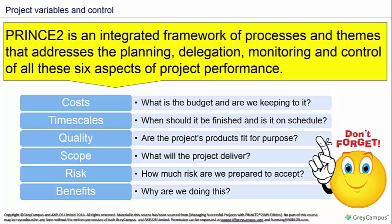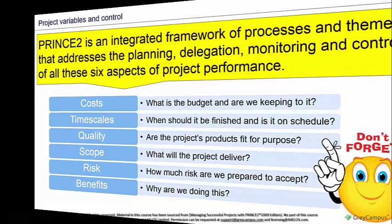PRINCE2 is an integrated framework of processes and themes that addresses the planning, delegation, monitoring, and control of all six aspects of project performance: cost, timescale, quality, scope, risk, and benefits. That's a list you need to remember.